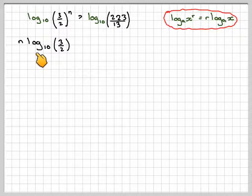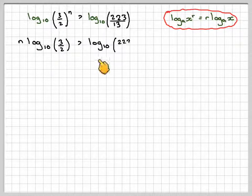So we get n log to the base 10 of 3 over 2 is greater than log to the base 10 of 223 over 13.